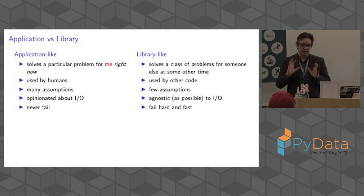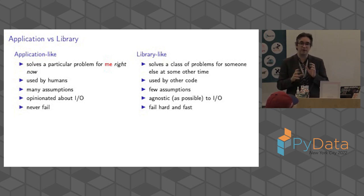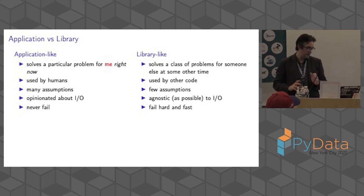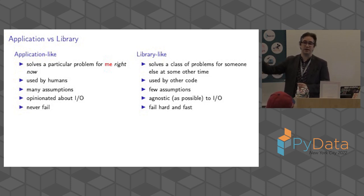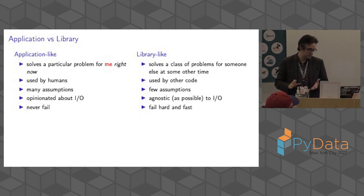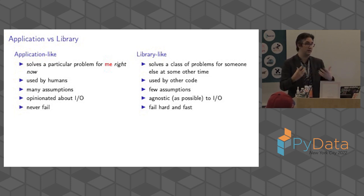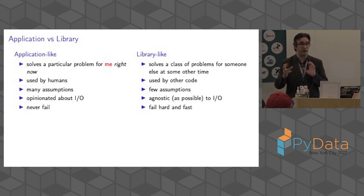A concrete way to think about this distinction is to consider software as either library-like or application-like. In an application, its job is to solve a problem for you right now — you as a human have a goal and this software helps you do it. In a library, your goal is to solve a class of problems for someone else at some other time — that someone else may be you in the future, but you're thinking more generally. An application is used by a human — the output goes into someone's eyeballs and they advance their own objectives. Whereas in a library, the output is then used by other code. These distinctions help drive some of your design decisions.